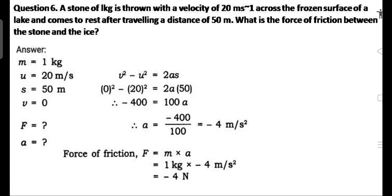Question 6: A stone of 1 kg is thrown with a velocity of 20 m/s across the frozen surface of a lake and comes to rest after traveling a distance of 50 meters. What is the force of friction between the stone and the ice? Answer: M = 1 kg, U = 20 m/s, V = 0, S = 50 m. Using V² − U² = 2AS: 0 − 400 = 2A × 50, so −400 = 100A, A = −4 m/s². Force of friction F = M × A = 1 × (−4) = −4 N.